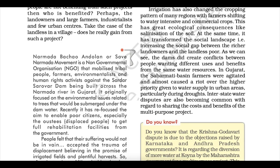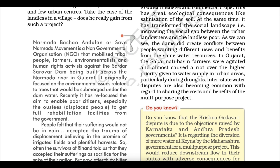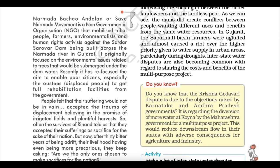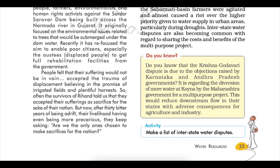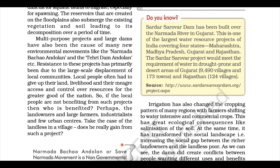The Narmada Bachao Andolan, or Save Narmada Movement, is an NGO that mobilised tribal people, farmers, environmentalists and human rights activists against the Sardar Sarovar Dam being built across the Narmada river in Gujarat. It originally focused on environmental issues related to trees submerged under dam water, and later refocused to enable displaced poor citizens to get full rehabilitation from the government. The displaced people accepted the trauma of displacement believing in the promise of irrigated fields, but after 30 bitter years they ask: 'Are we the only ones chosen to make sacrifice for the nation?'